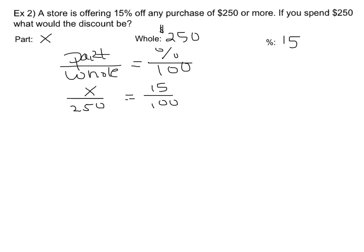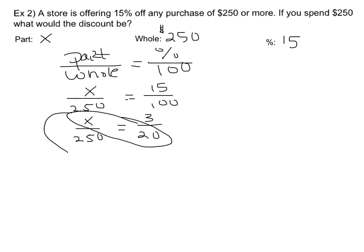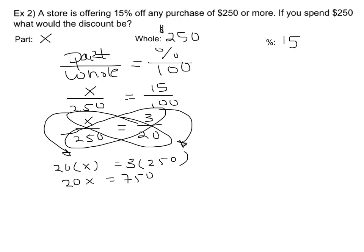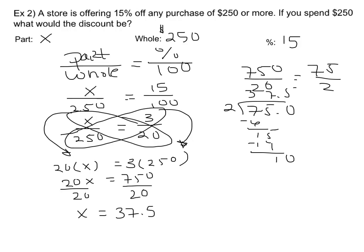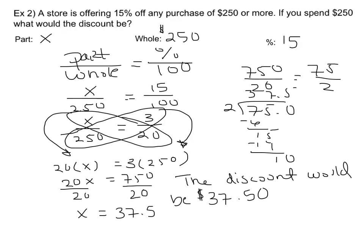If you can simplify, it's generally easier to use a simplified fraction. I went ahead and simplified 15 over 100 to 3 over 20, and now I can use my cross products to solve this equation. I get 20x equals 750, and now I need to use my inverse operations to solve. 20x means 20 times x, so the inverse of multiplying by 20 is to divide by 20. I'm talking about money, so I'm going to use decimals. I get x equals 37.5, so the discount would be $37.50. Always make sure you answer the question in a sentence.